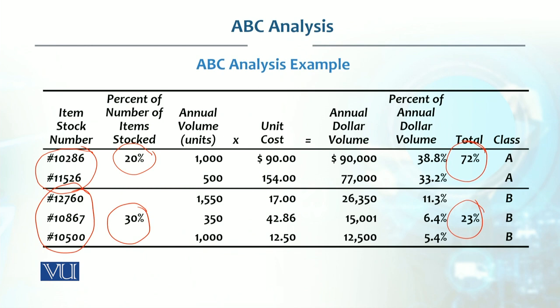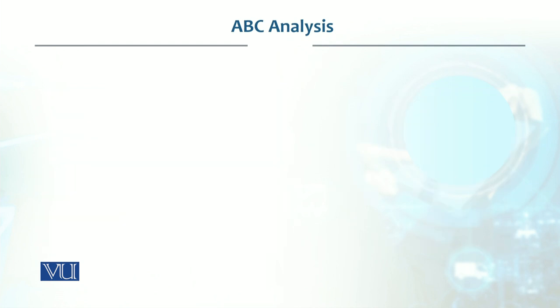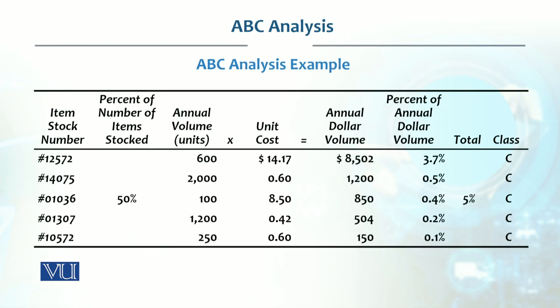The total dollar volume for B-class is 23 percent — for example, values of 11.3, 6.4, and 5.4 percent. So we consider this B-class. This is the management and control system — we have different systems: A is different, B is different.